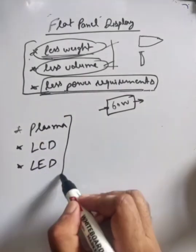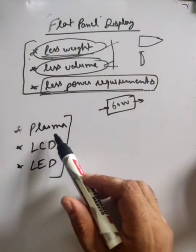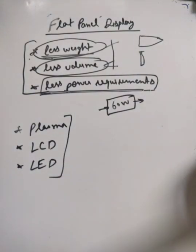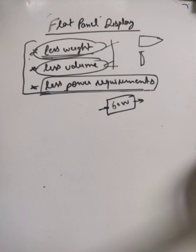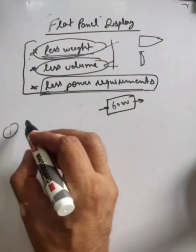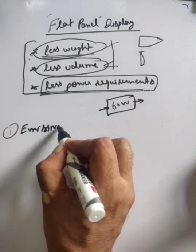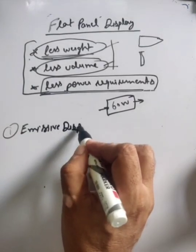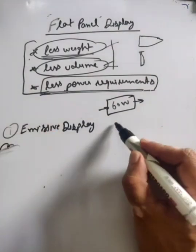Basically these are all forms - LCD and LED and plasma. The difference is these types. Basically these are flat panel displays. These are two types. One is emissive display, one is non-emissive display.